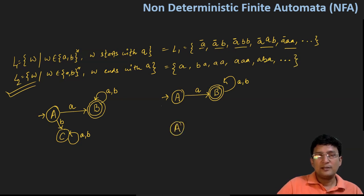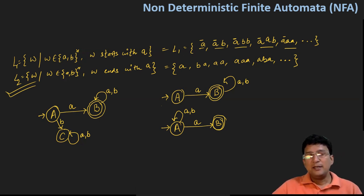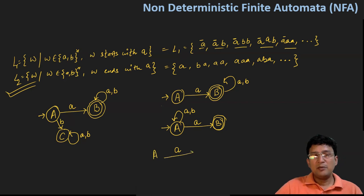What will the NFA be for this language? There is a state A which is the start state. My string should end with A, so the smallest string accepted is just A, and B will be the final state. Initially, if A or B comes, I don't mind — I am only concerned with strings ending with A. I have drawn a transition from state A to B with the symbol A, but initially if I get A or B, I will remain at state A. In the DFA, this kind of transition would not be acceptable because there are two transitions on symbol A from state A — I may remain at A or go to state B.